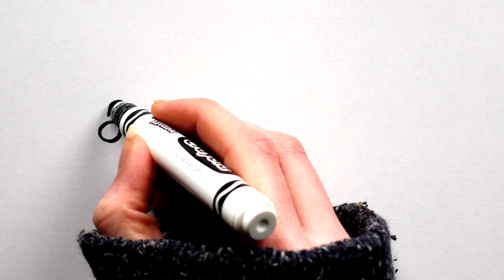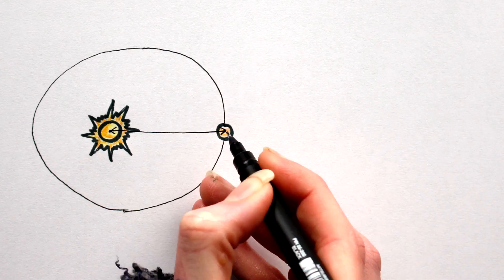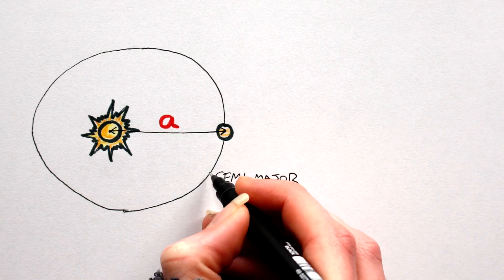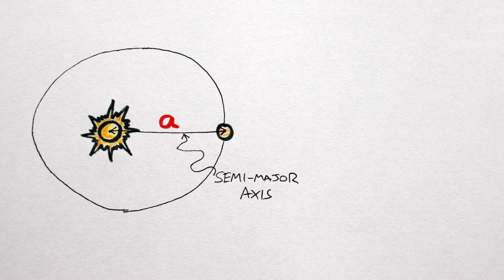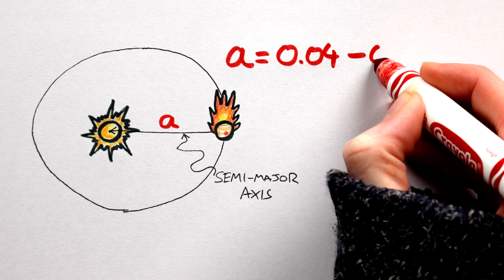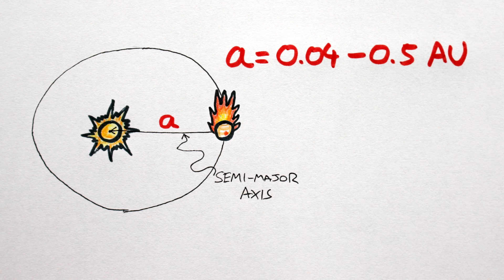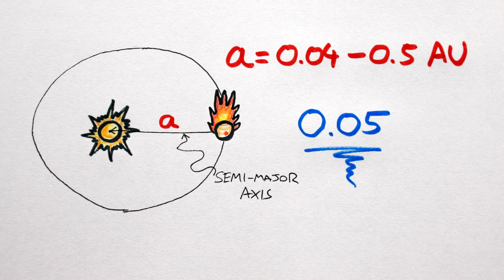Semi-major axis. In terms of planetary orbits, the semi-major axis A is essentially the distance from our planet to its star, the average separation between the two bodies. To ensure our hot Jupiter is actually a hot Jupiter, A has to be between 0.04 and 0.5 AU. I'll go with 0.05 AU.